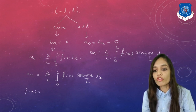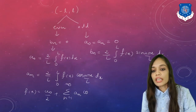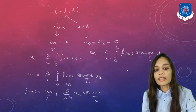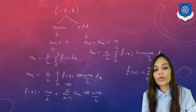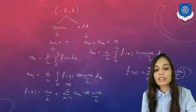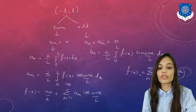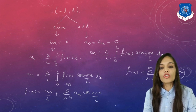If the function is odd, A0 and An = 0, and the Fourier series is given by f(x) = Σₙ₌₁^∞ Bn·sin(nπx/L). I hope you have understood the topic. Thank you for watching.